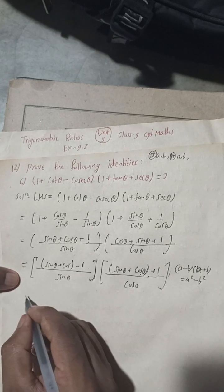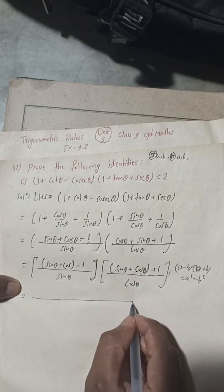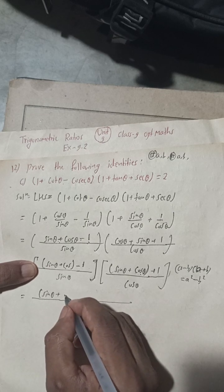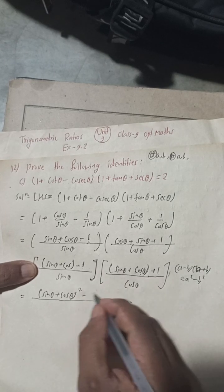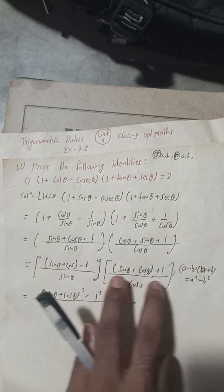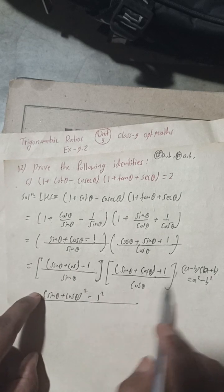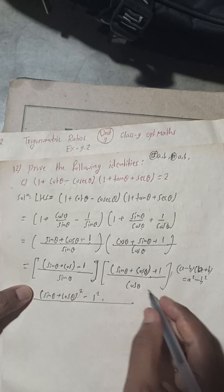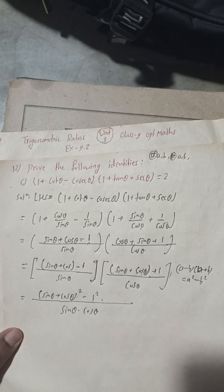So we write (sin θ + cos θ)² − 1, all divided by sin θ × cos θ. Now applying the (a + b)² formula: a² + 2ab + b², we get sin²θ + 2 sin θ cos θ + cos²θ − 1, all over sin θ cos θ.